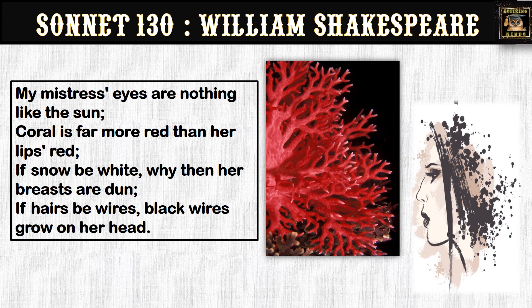'If hairs be wires, black wires grow on her head.' Now he goes on to describe the hair. Generally, poets spend a lot of time in poems describing the hair of women. Here, he continues with a realistic portrayal, saying the hair of the mistress are like black wires — rejecting the usual description of women's hair as flowing golden locks on the temples of the face. He is presenting the beauty of the woman exactly as it is.